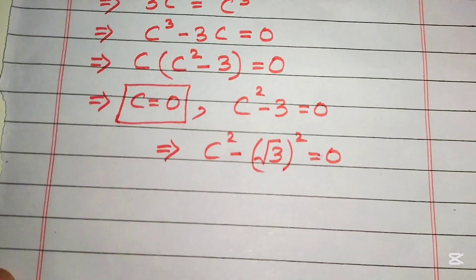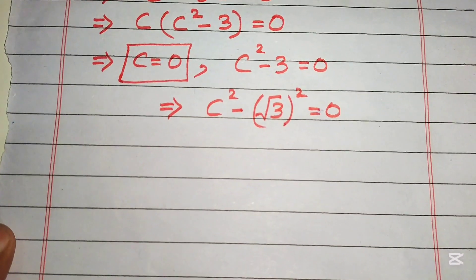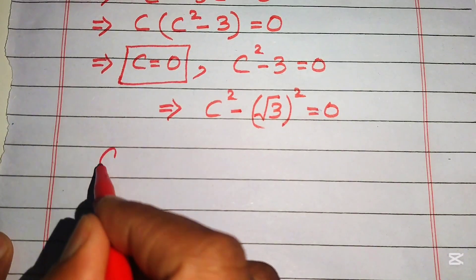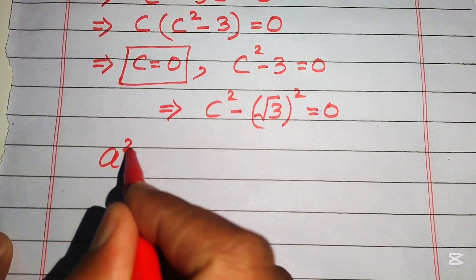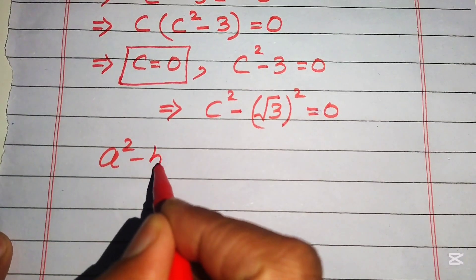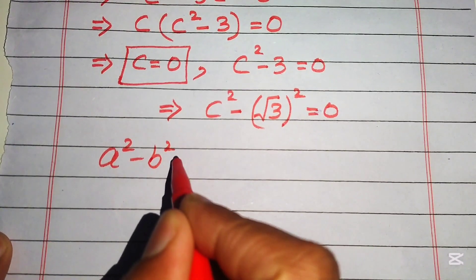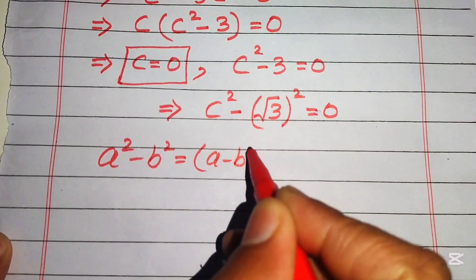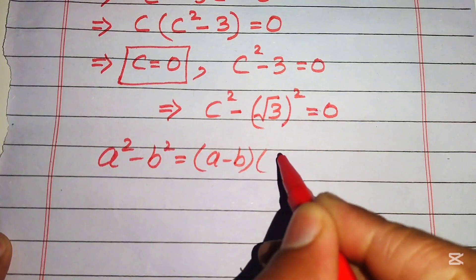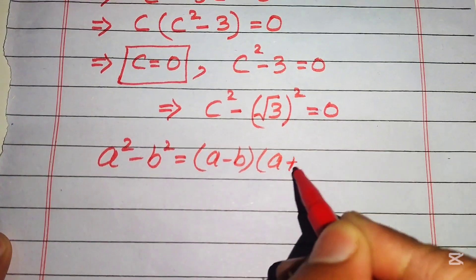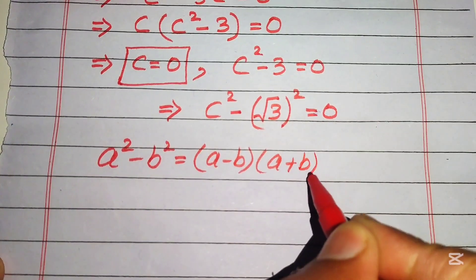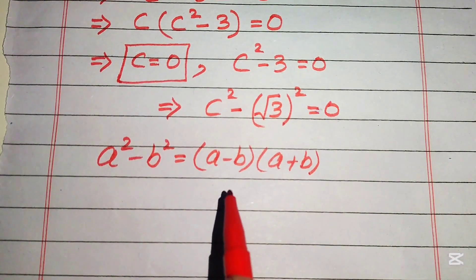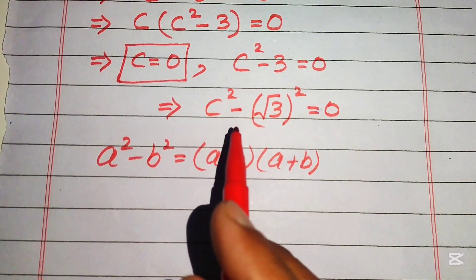We apply the difference of squares formula: a squared minus b squared equals a minus b times a plus b, on the left-hand side of this equation.